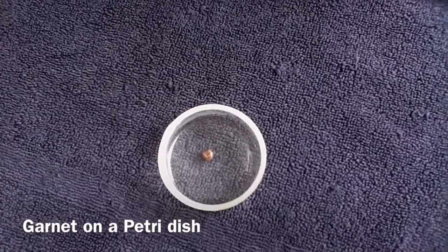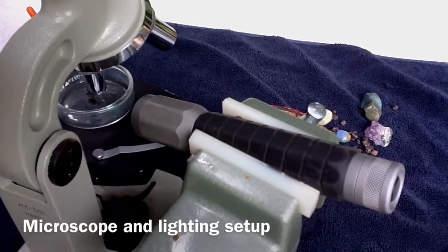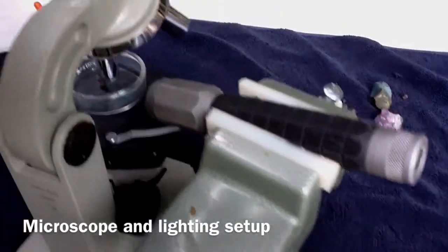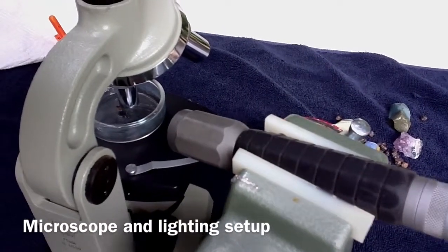I'm going to place the Petri dish onto a microscope. Here's the lighting setup. I've taken a common flashlight, put it in a vise. There are other ways of doing it, but the idea is to get the light where you want it.